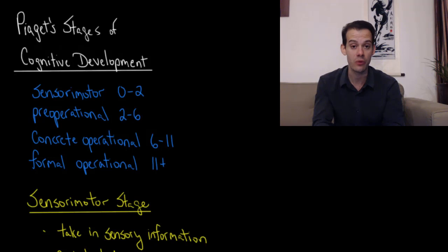Jean Piaget proposed four main stages that children move through. These were the sensorimotor stage beginning at birth and lasting until about age two, followed by the preoperational stage beginning around age two and lasting until about age six.